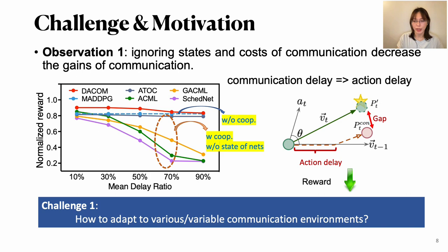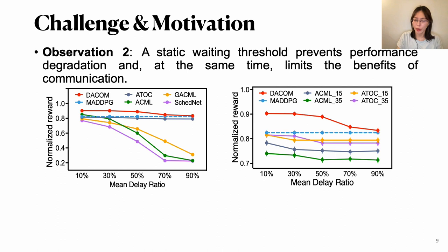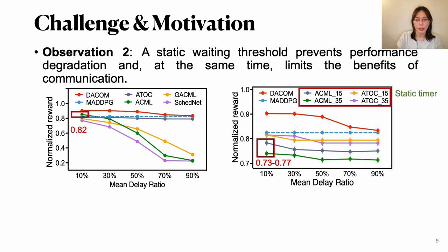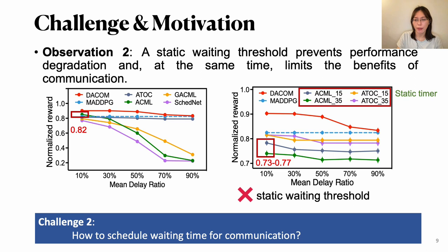So the challenge here is how to adapt to various or variable communication network states. Given the previous observation, here maybe we can have another idea: how about setting a static timer to avoid endless or meaningless waiting? From the results we find that, yeah, it obviously can avoid decrease, especially for environments with high delays. However, at the same time, it also limits performance. Here it's obvious for lower delay scenarios. So we give the conclusion that static waiting time is not good, especially for all cases in variable environments.